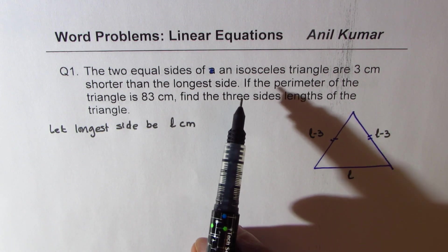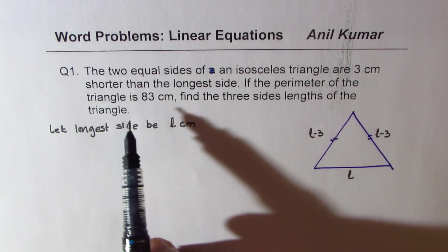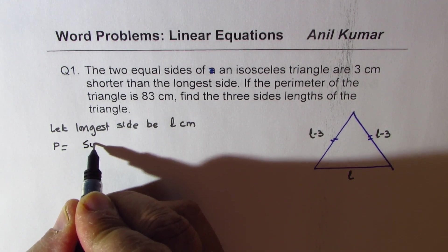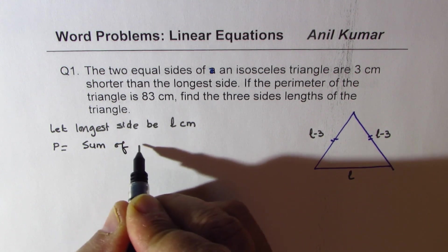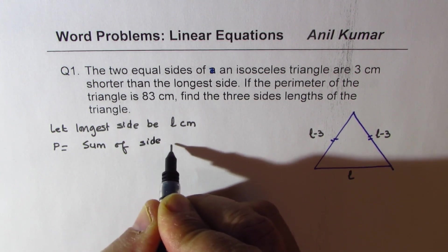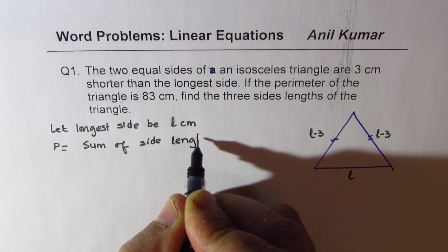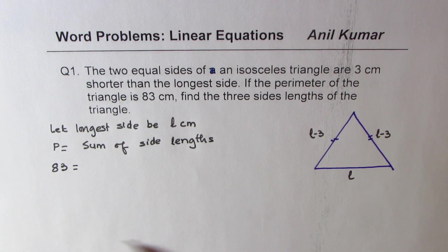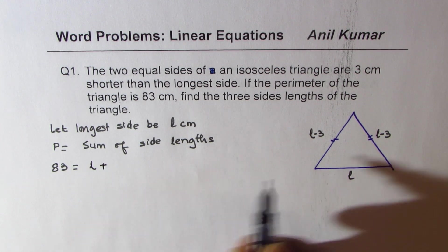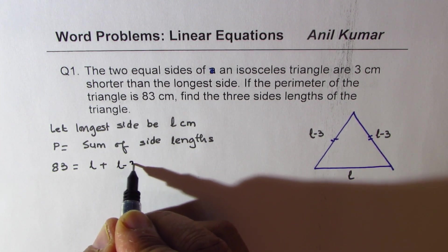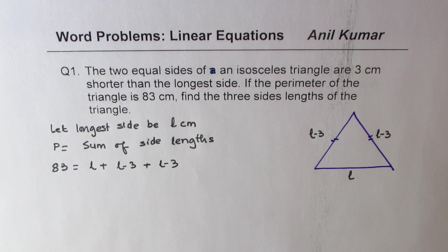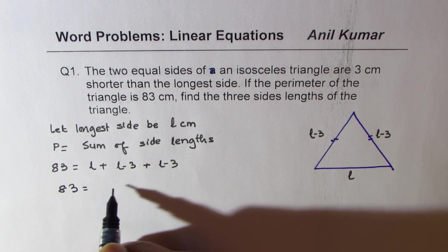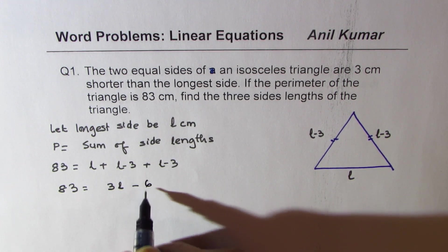Now we are given if the perimeter of the triangle is 83. Now perimeter is sum of sides. This perimeter is 83. So 83 equals L plus L minus 3 plus L minus 3. So if you solve this, you get 83 equals 3L minus 6.